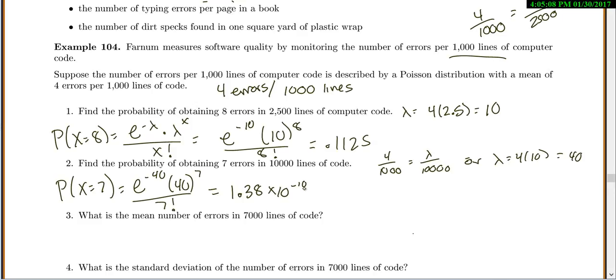That seems like a very small probability, but that makes sense because we were expecting about 40 errors. Since λ is the average number of errors, we're expecting about 40, so to get only 7 would be very unlikely.